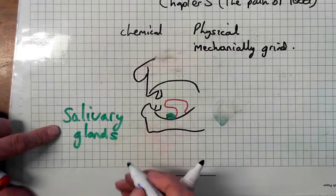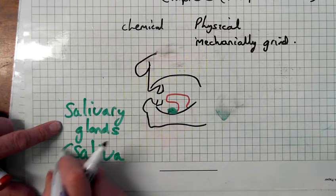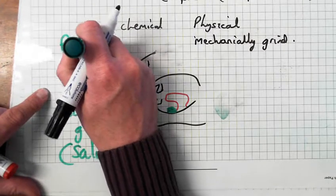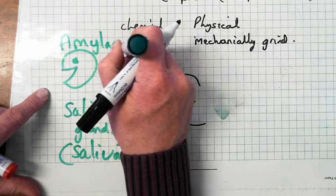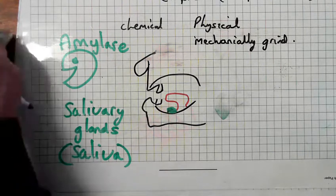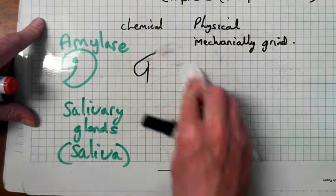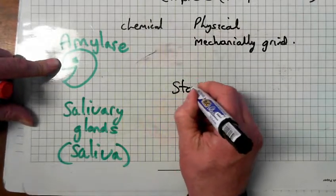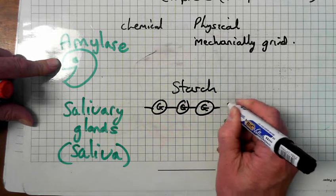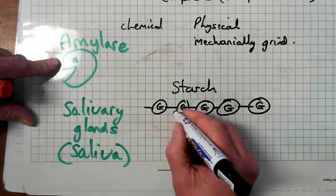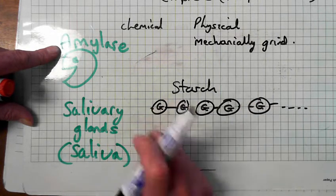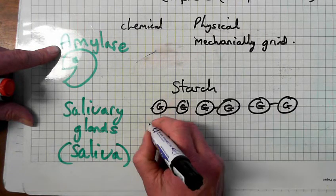The salivary glands produce saliva. What's in that saliva? There's an enzyme called amylase — that's an A-S-E, an enzyme called amylase. So when you put the food into your mouth, the enzyme amylase is breaking down the starchy food. Amylase breaks down starch, which is a long chain of glucose molecules. Amylase breaks the bond every second one, and each resulting pair is called maltose.